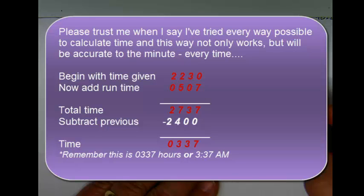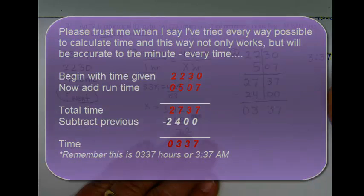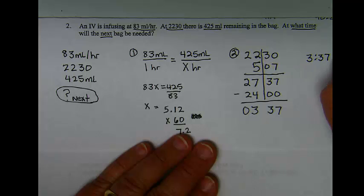So according to this, the next bag will be needed at, and there are two ways I can write this, zero in front of it makes it 0100 hours, so this would be 0337 hours, or if I write this, I must designate if it's AM or PM.